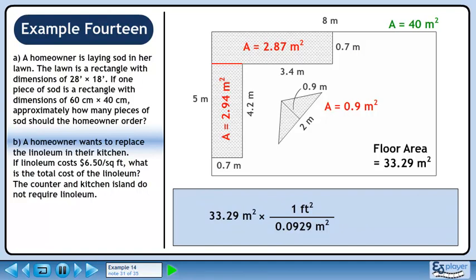We know 1 square foot equals 0.0929 square meters. We want to eliminate square meters, so put 0.0929 square meters in the denominator. We are trying to get square feet, so put 1 square foot in the numerator.